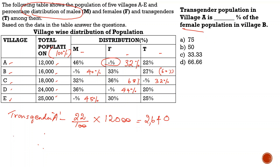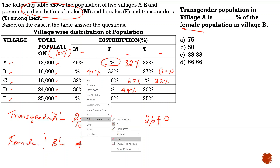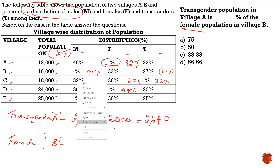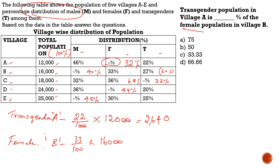Next, female population in village B: female percentage is 33%. So 33 divided by 100 into 16,000 — village B's population — gives 5,280. The question is: transgender population in village A is what percentage of female population of village B?